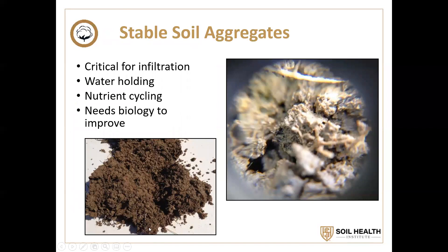This is what good aggregates look like — it looks like chocolate cake crumbs in the left-hand corner. And looking under a microscope, you can see the big canyons of airspace or pore space where water can move through. Stable soil aggregates are critical for soil water infiltration, holding capacity through the growing season, and they provide a place for nutrient cycling. The key is you need a robust soil biology to improve aggregation to start to achieve all these benefits.